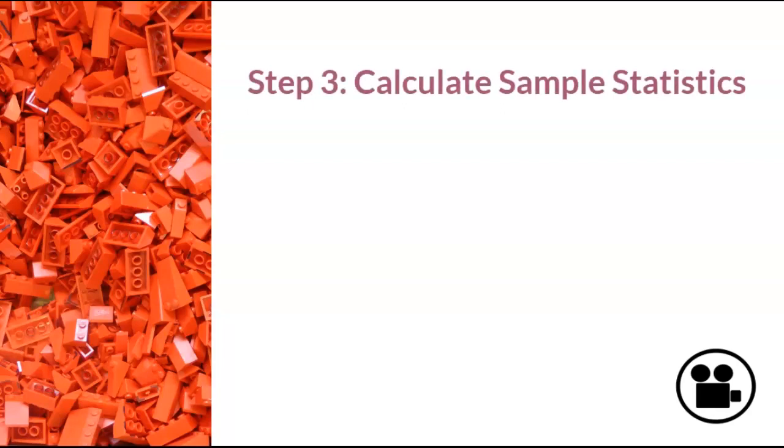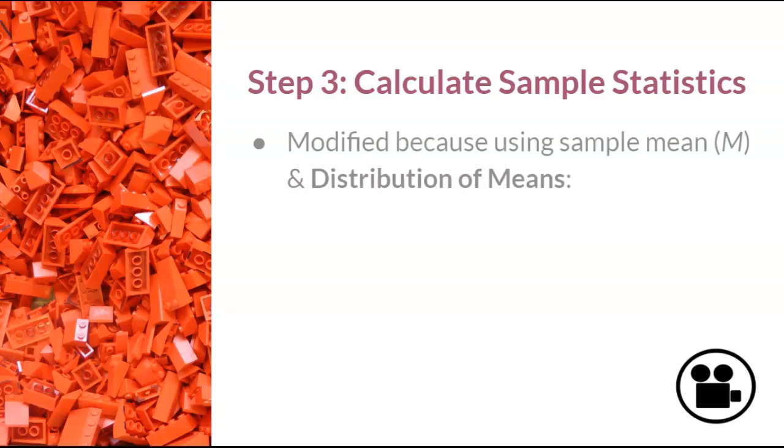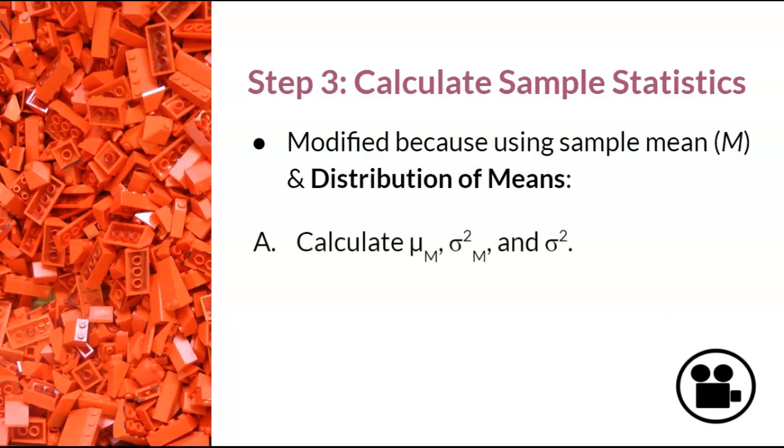Step three, the red lego, is to collect data and calculate sample statistics. This step is our only modification because we are using a sample mean now and the distribution of means. Since this is a z-test, we need to of course calculate a z-score. However, we first need to calculate mu M, sigma squared M,